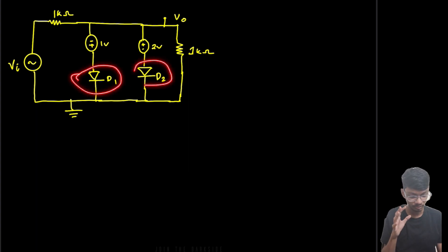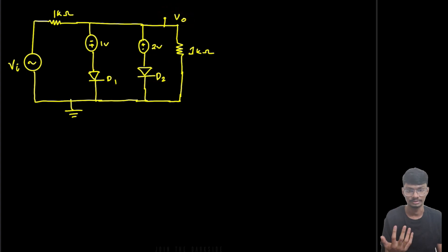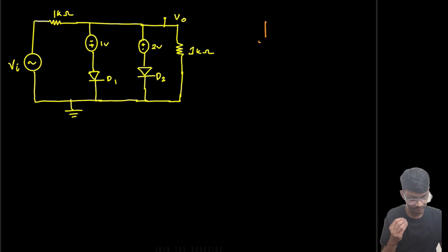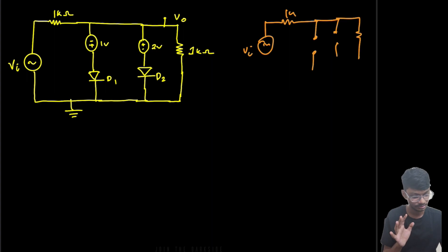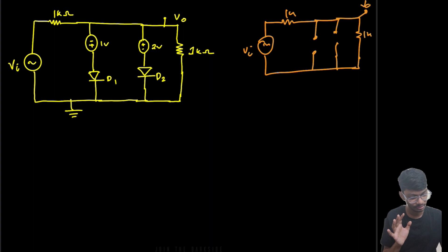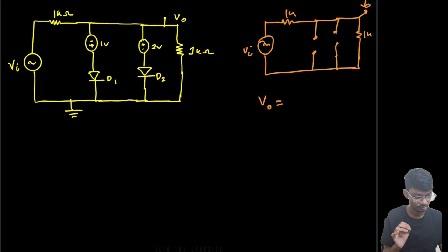Let's first analyze the circuit when both D1 and D2 are off. When both are off, we have a voltage divider circuit with Vi, two 1 kΩ resistors, and we take the output from the midpoint. So Vo equals Vi times 1 divided by (1 + 1), which gives Vo = Vi/2.